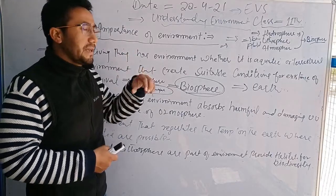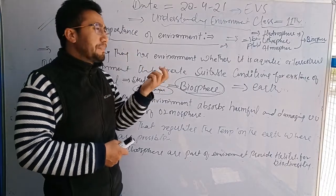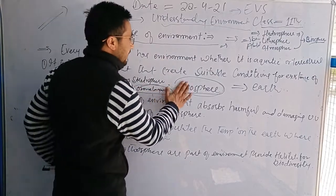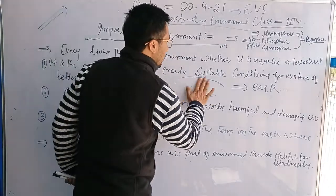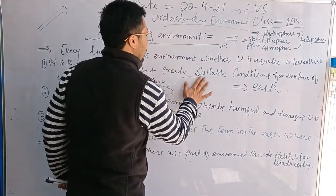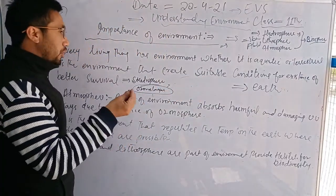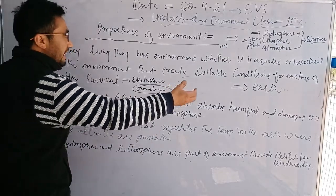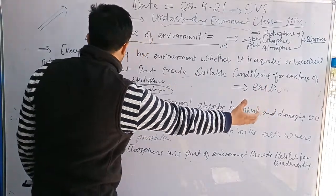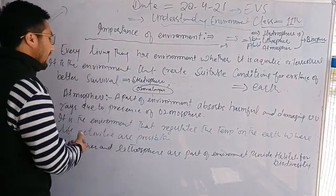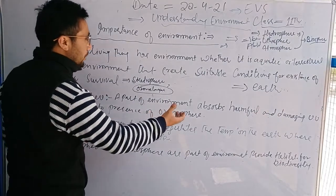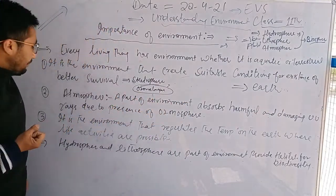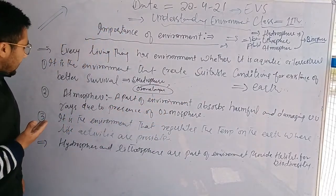The atmospheric layers include the troposphere, stratosphere, thermosphere, and ionosphere. The atmosphere is very important for us because it keeps out damaging UV rays and absorbs them due to the presence of the ozone layer.